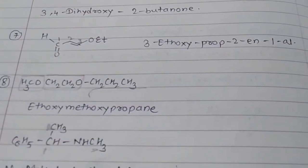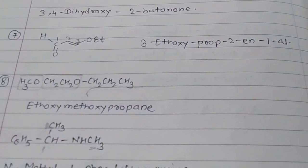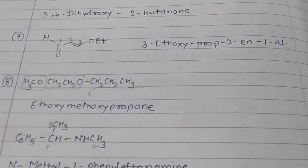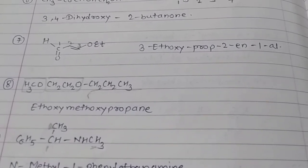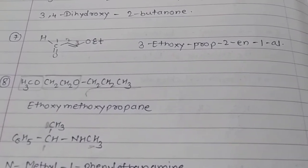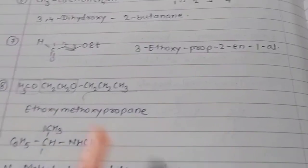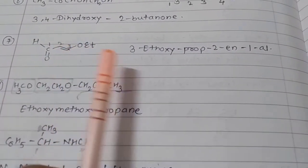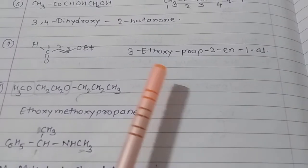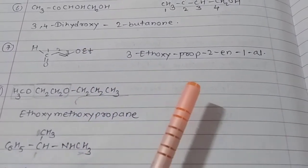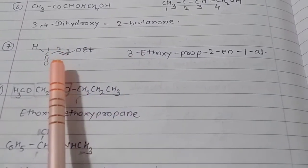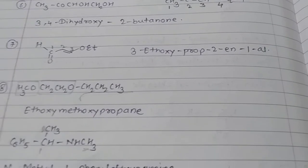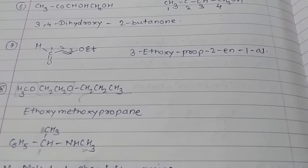The next example has an aldehyde, a diene group, an ether, and a double bond. The major functional group is aldehyde. Numbering one, two, three: three-ethoxy. The second and third carbons have a double bond, so prop-2-en. The aldehyde group is on the first carbon, so one-al. The name is 3-ethoxy-prop-2-en-1-al.